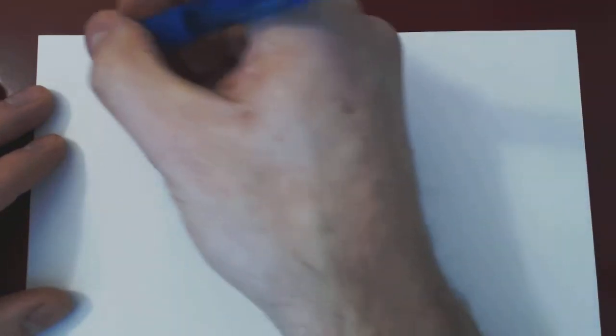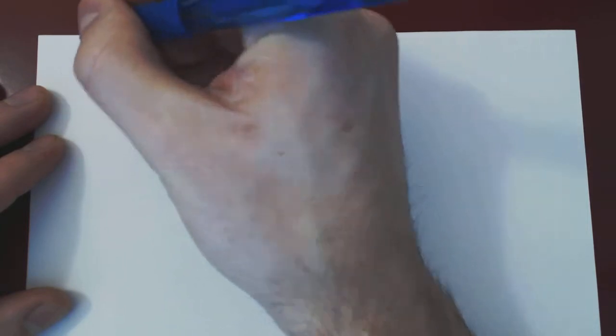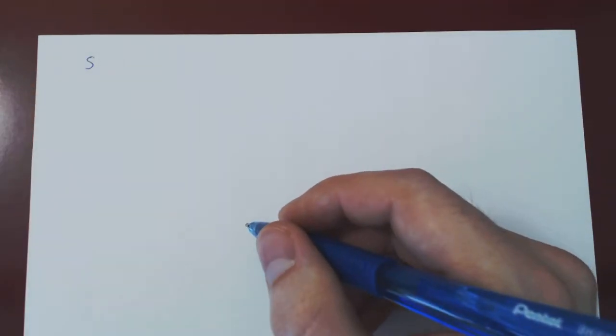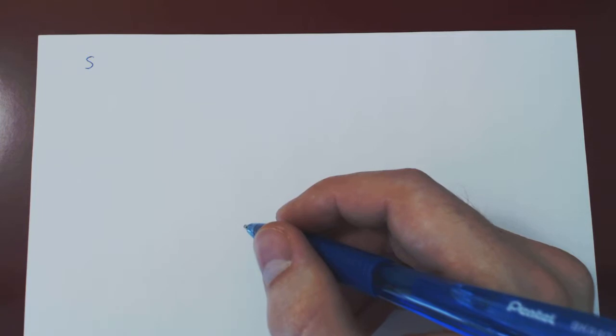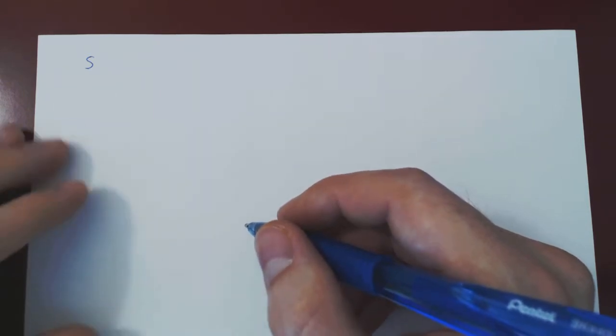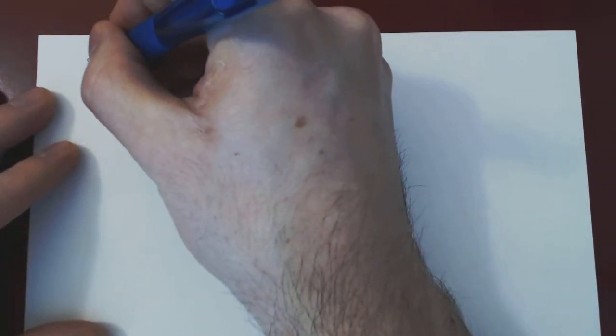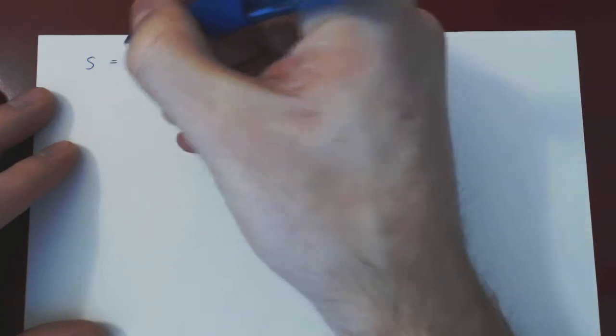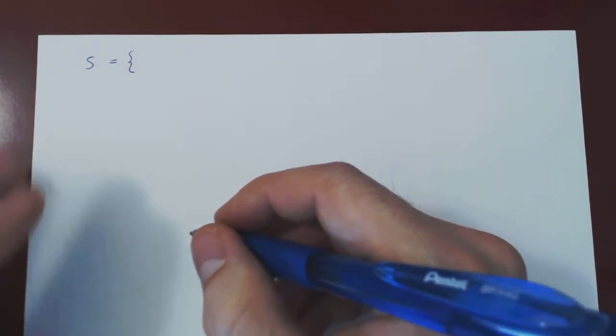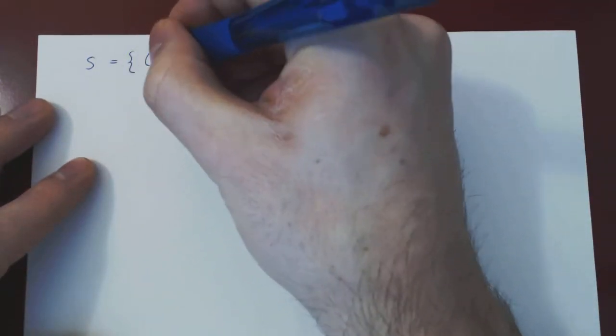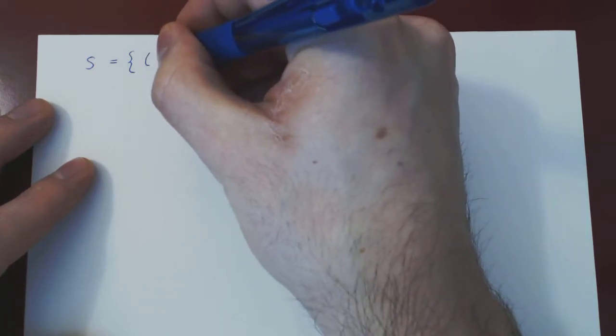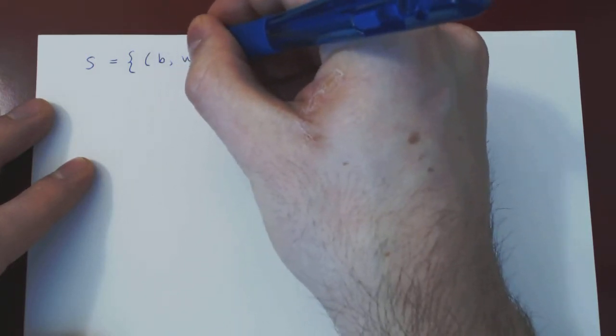So now we'll have a different sample space. If we keep track of the figure and observe the two figures on the upper face of the white and the black die, now we will have a sample space where the outcomes are tuples. There will be the figure on the black die being observed and the figure on the white die.